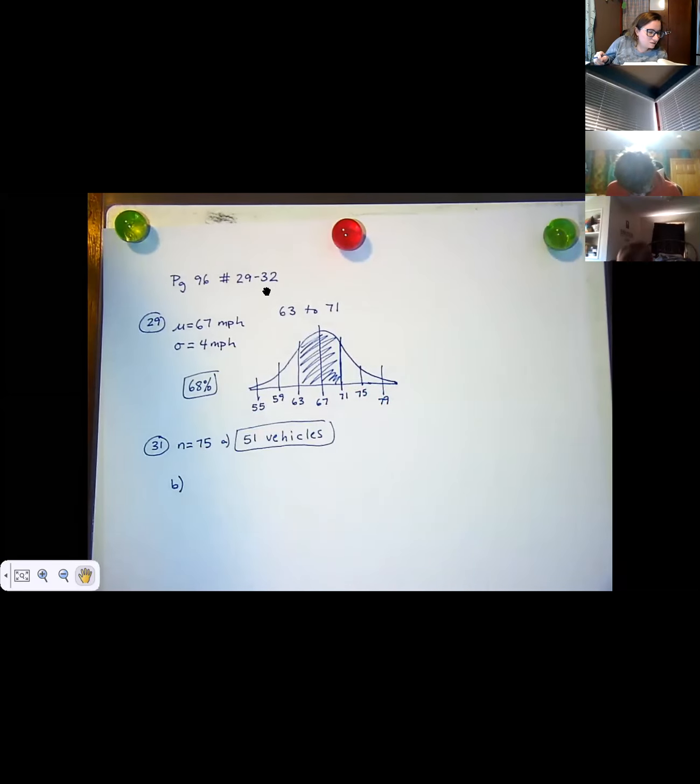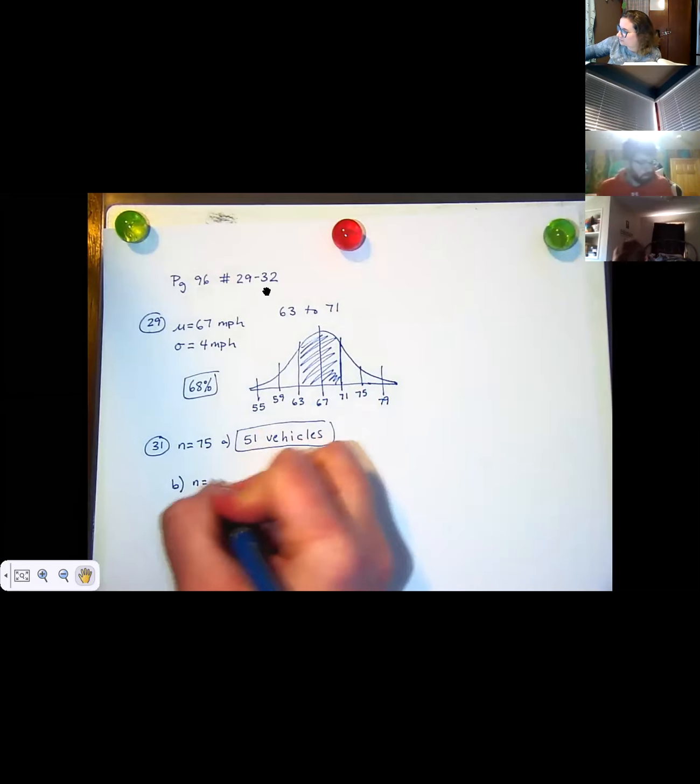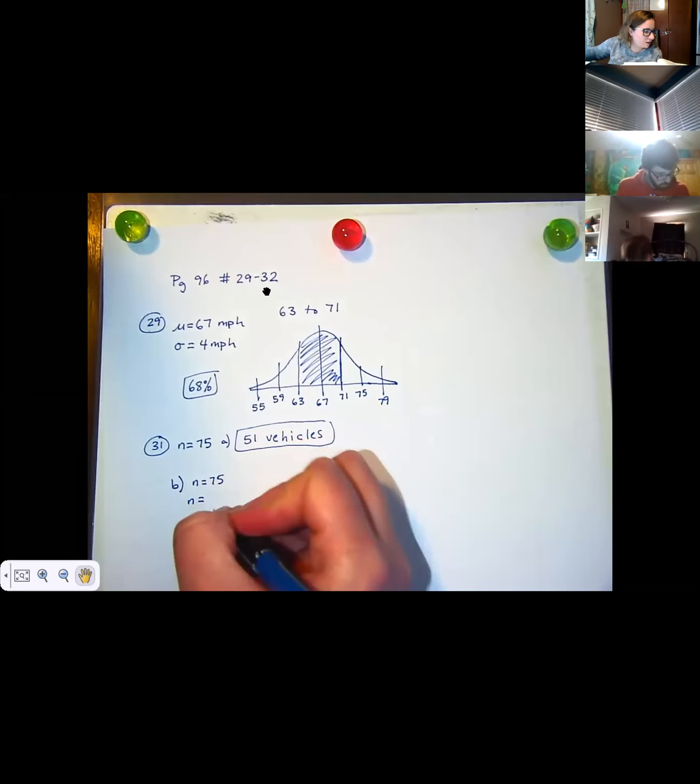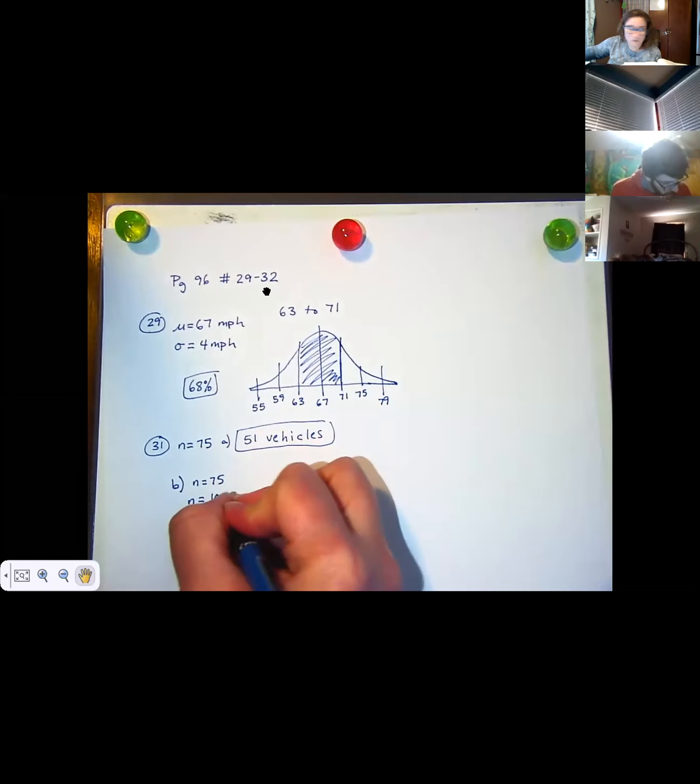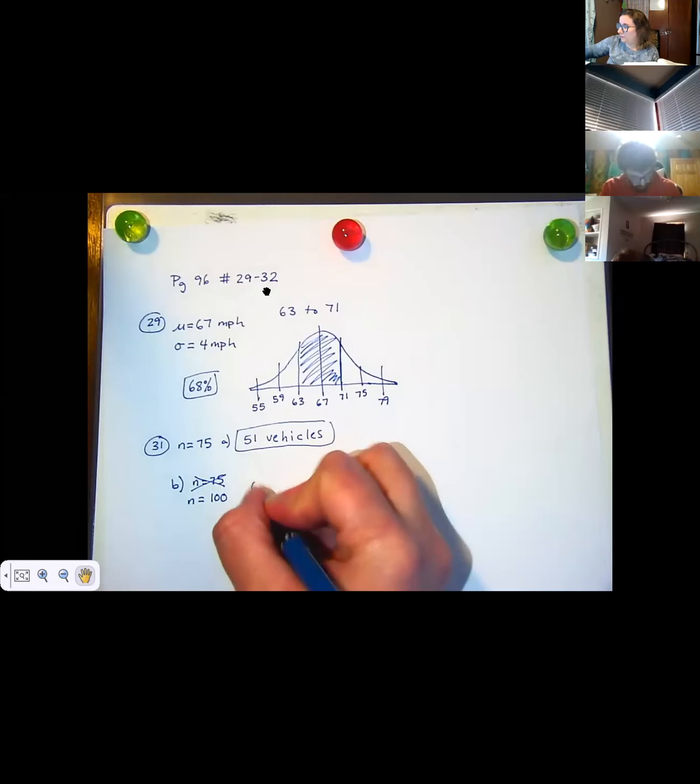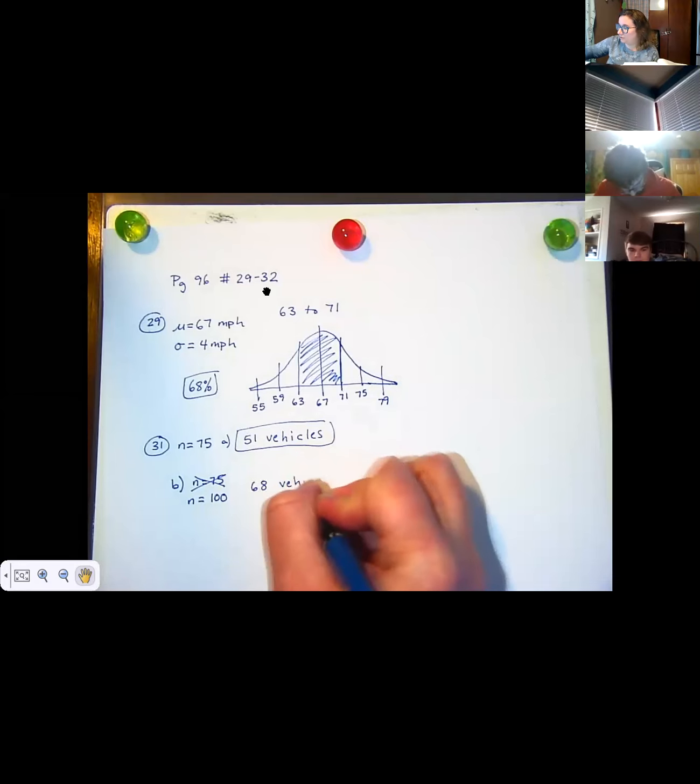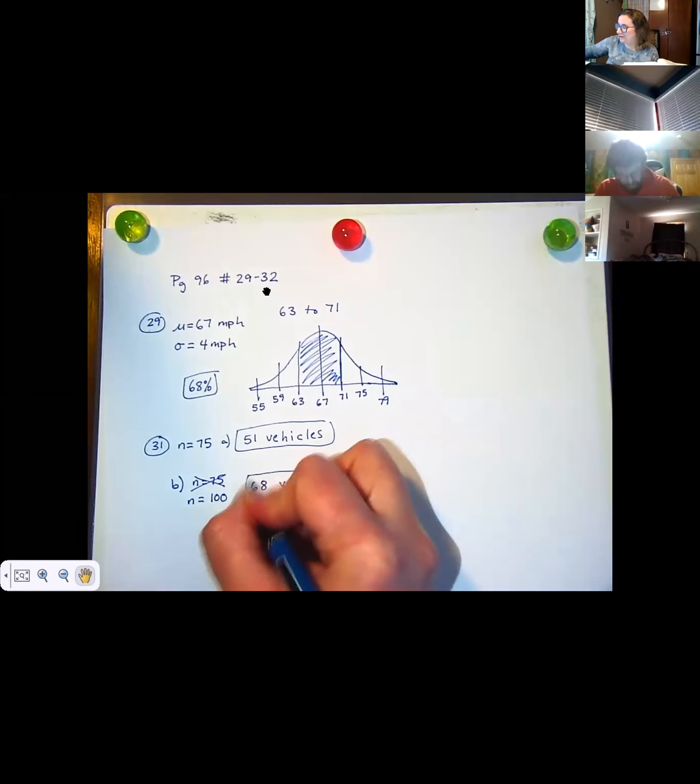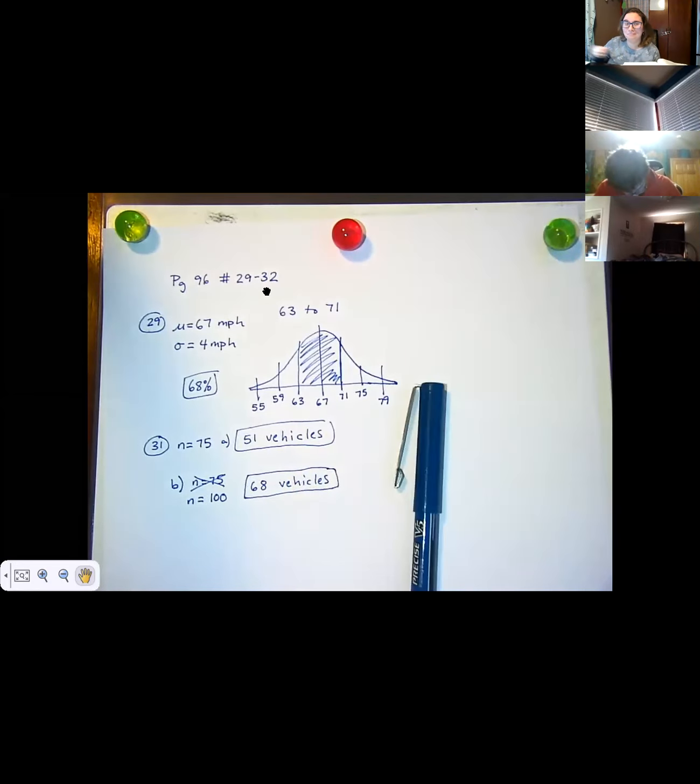And then B says, in a sample of 25 additional vehicles, about how many vehicles would you expect to have speeds between 63 and 71 miles per hour? So if instead of our N being 75, if our N changed to, what did it say? We're adding another 25? So now our N is 100. So we need to figure out what 68% of 100 is. And I'm going to shame you a little bit if you just put that in your calculator, because 68% of 100 is 68.